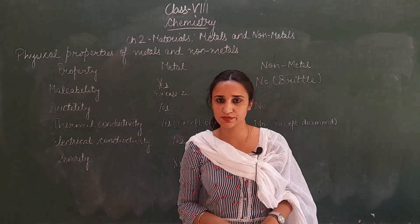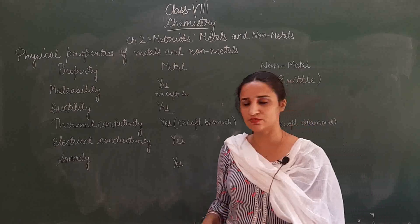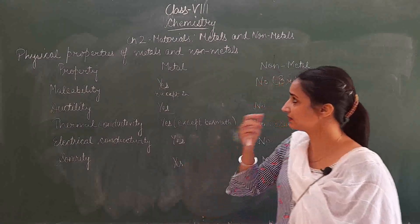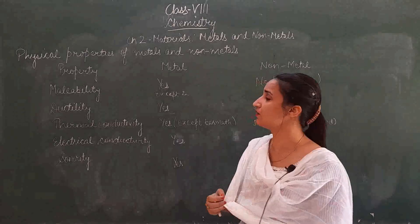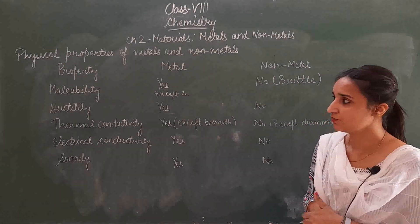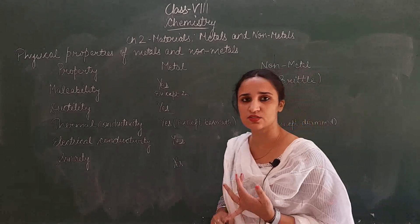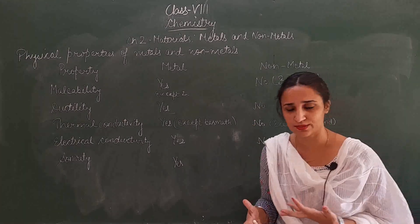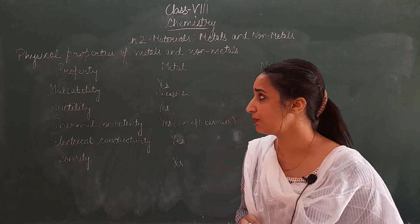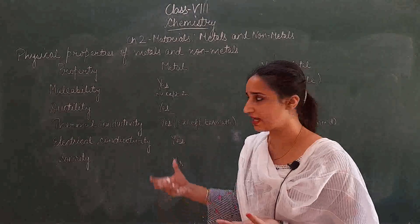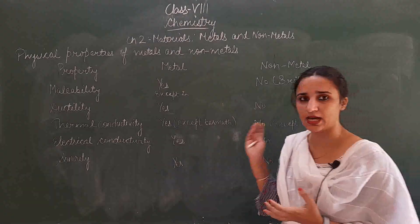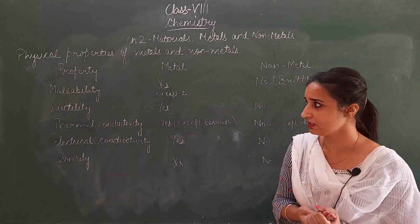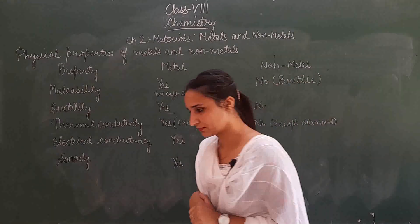Hello students, welcome back. This is our third video of chapter Metals and Non-Metals. In the previous videos we discussed various elements and characterized them as metals and non-metals. We covered physical properties like physical state, hardness, and lustre — that metals are lustrous with a shiny structure and non-metals are dull. In this video we will discuss the rest of the physical properties.